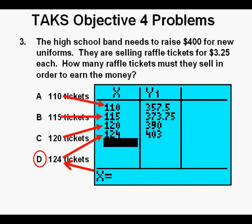From here we can enter all the input values of answer A, B, C, and D. The output values pop up automatically. And we see that our correct answer, the only input that gives us at least $400, is answer D, 124 tickets.